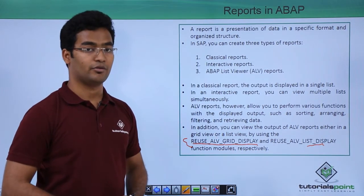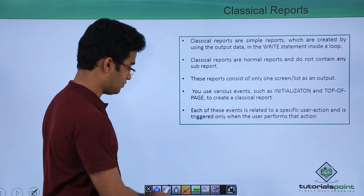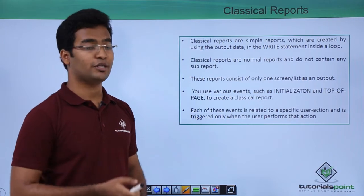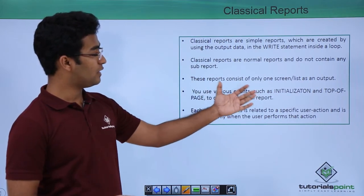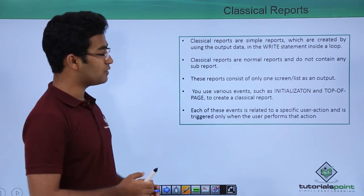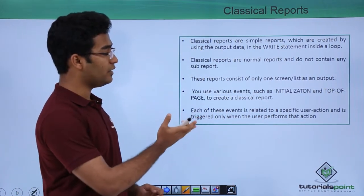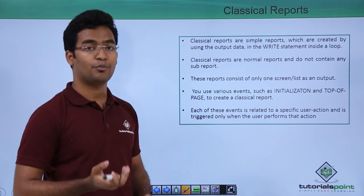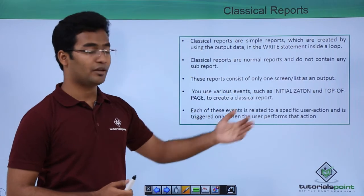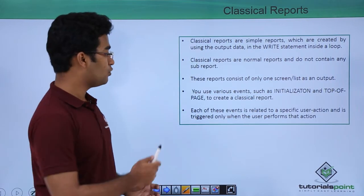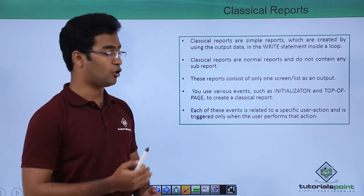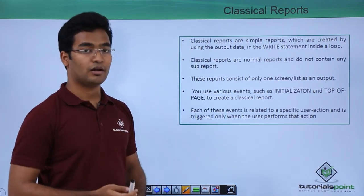So now let us look at the classical reports. Classical reports are simple reports where we can use write statements and loop statements. Moreover, they are just normal reports — they do not contain any sub-reports. These reports consist of only one screen or list as output, whereas in interactive reports there can be multiple screens or lists. We use various events in classical programming like initialization and top-of-page to create classical reports.